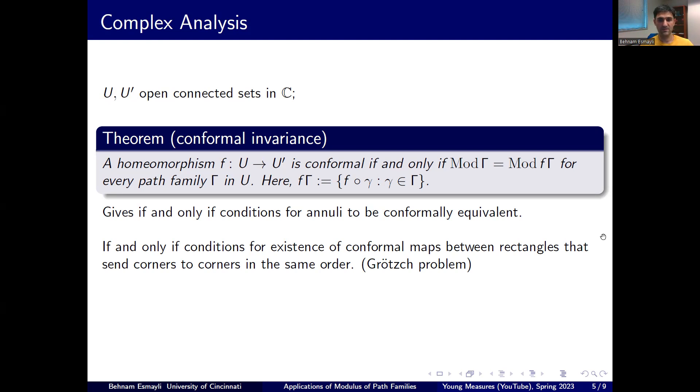So Grotzsch asked, now that you cannot map this conformally to the other one, what is the closest to being a conformal map that can do it? And this making precise what we mean by being close to conformal means, which ended up giving us the notion of quasi-conformal maps. So the term apparently was coined by Ahlfors around 1936 or so, but the origin of course goes back to Grotzsch. And the same also goes with annuli. If you cannot map them conformally, then you can map them by quasi-conformal map.